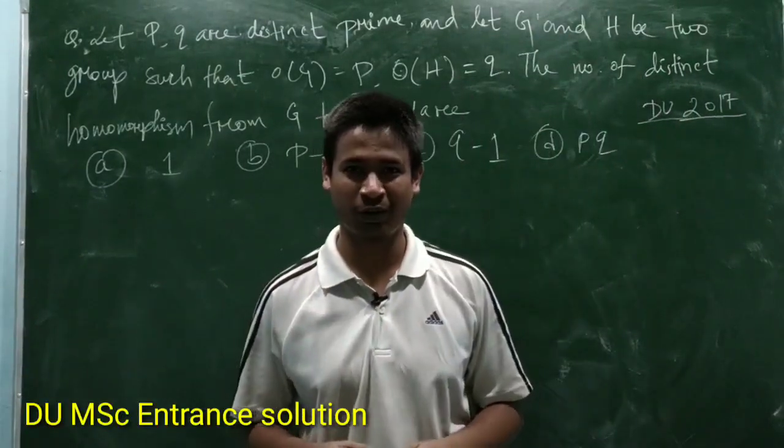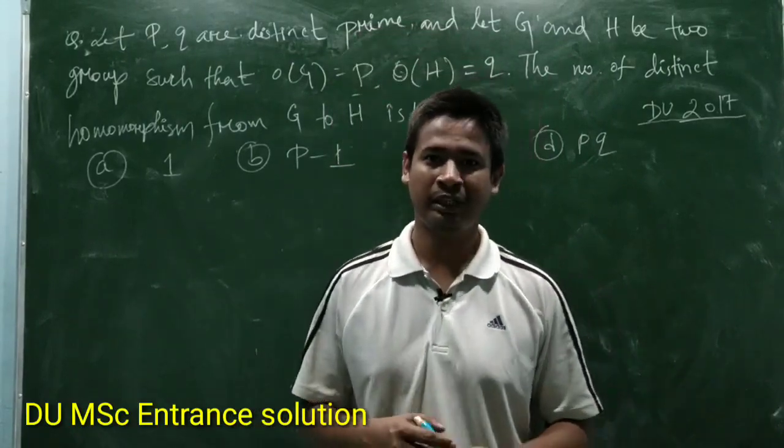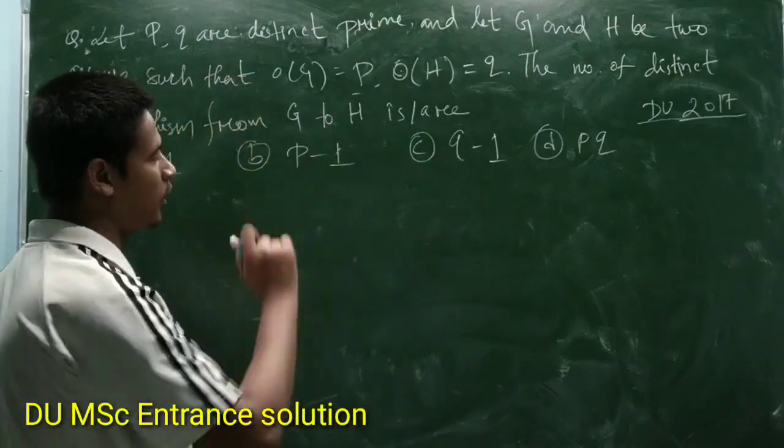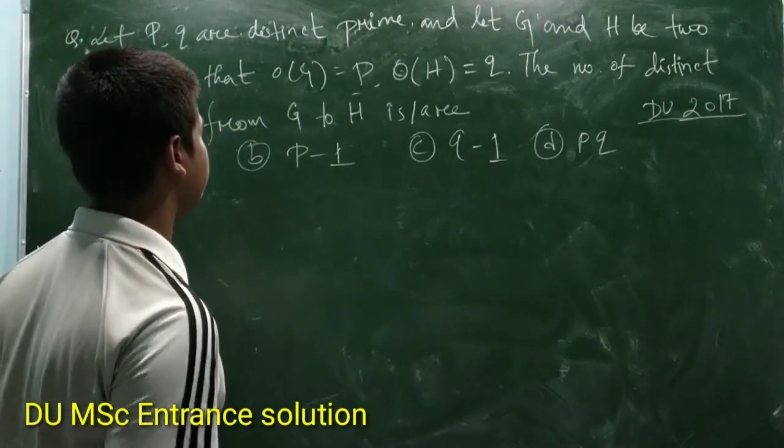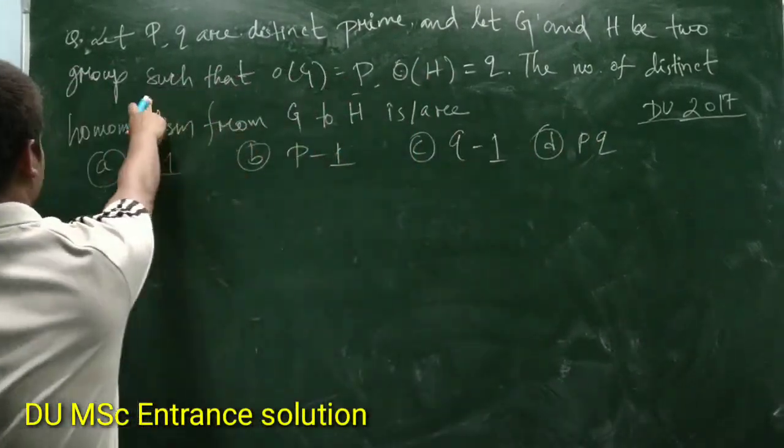Hello everyone, let's continue our session of solving modern algebra part of previous year Delhi University entrance exam. This question from 2007: let P, Q, R be distinct primes and let G and H be two groups